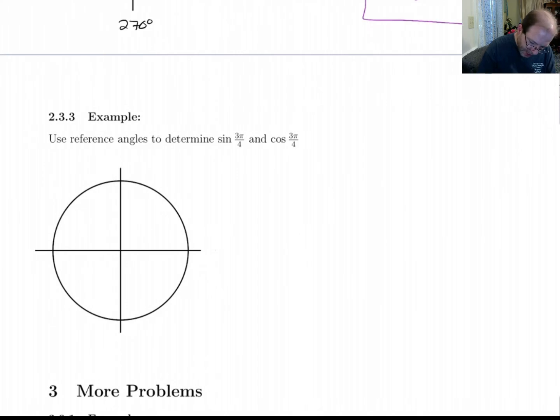Use reference angles to determine sine and cosine of 3 pi over 4. All right. So let's label this. Up top, we've got pi over 2. And over here is pi. So this is 3 quarters pi. So that's going to be halfway in between these. So this is 3 pi over 4. My reference angle here is going to be pi over 4. Or 45 degrees.